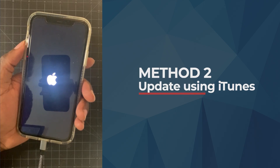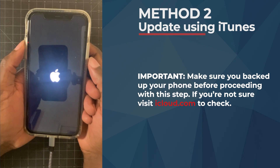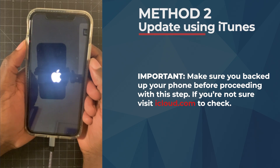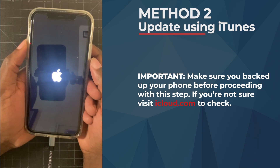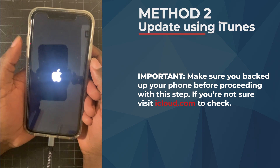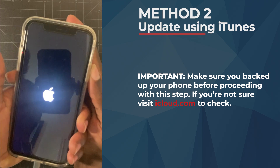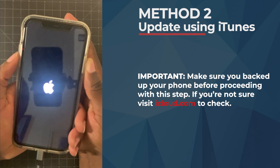Method number two and method number three would require you to have backed up your phone. If you didn't back up your phone, there's a chance you might lose all your information. I would recommend you try this method after you've backed up. Now you're probably wondering how can I back up a phone in this state — well, you can't. Hopefully you backed up your information with iCloud or iTunes before this happened.